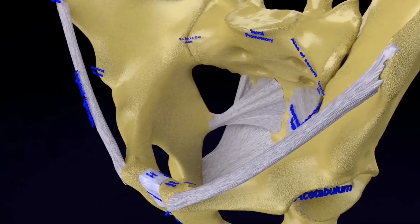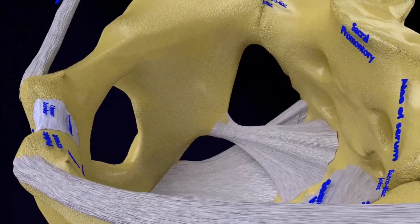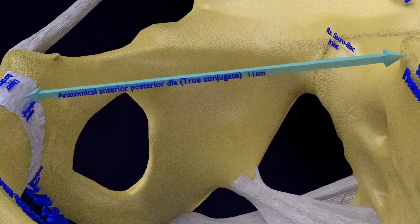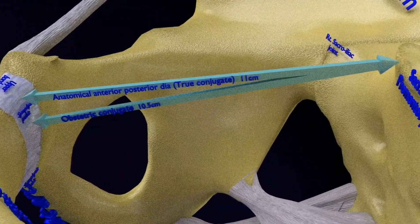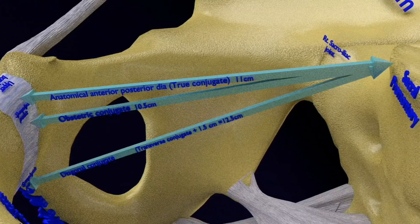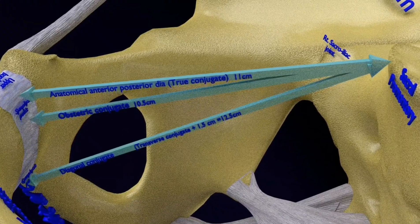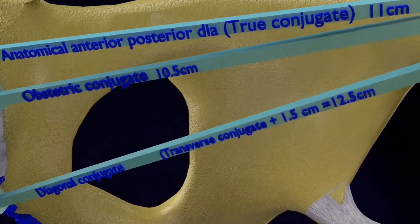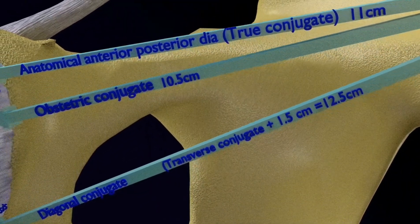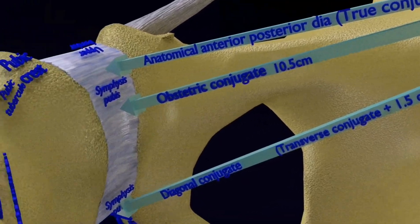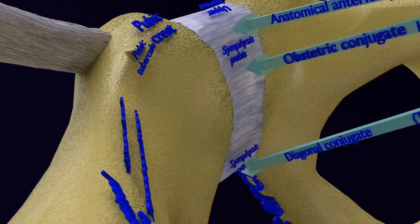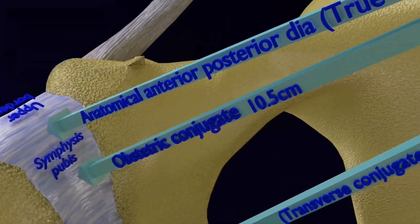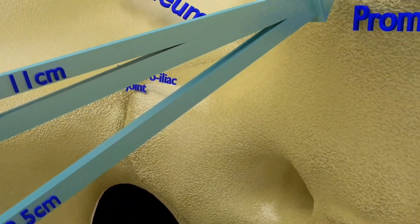There are three anterior-posterior diameters based on the points present on the symphysis pubis. First, the anatomical anterior-posterior diameter of 11 cm, extending from the tip of the sacral promontory to the upper border of the symphysis pubis. Next, the obstetric conjugate, extending from the sacral promontory to the most bulging point on the back of the symphysis pubis — about 1 cm below its upper border — measuring 10.5 cm, the shortest AP diameter. The diagonal conjugate extends from the sacral promontory to the lower border of the symphysis pubis and is 12.5 cm, which is 1.5 cm longer than the true conjugate.